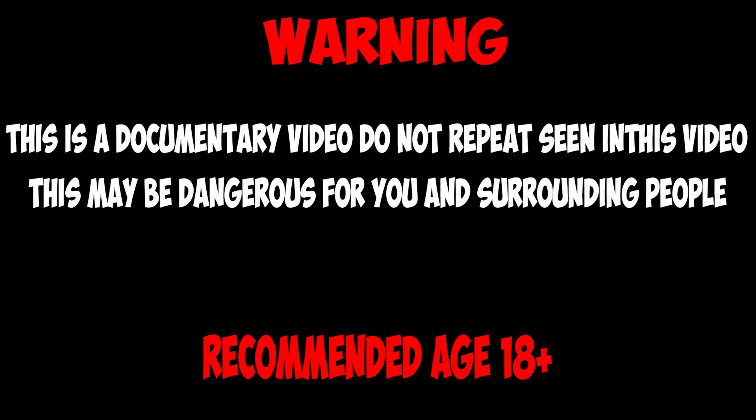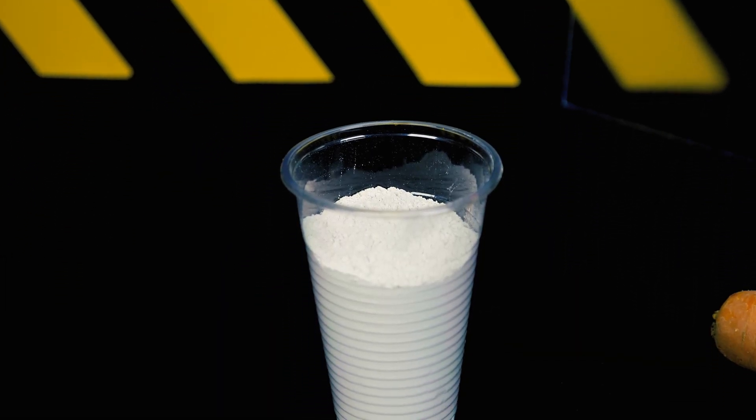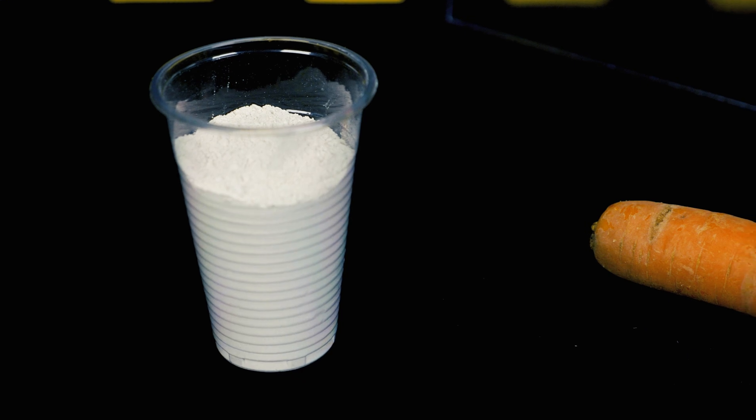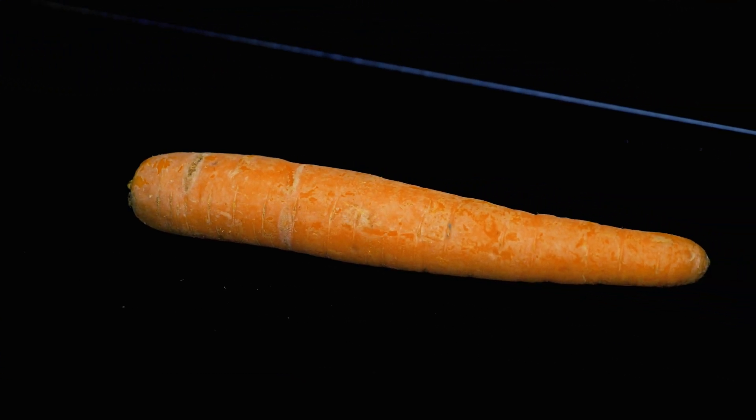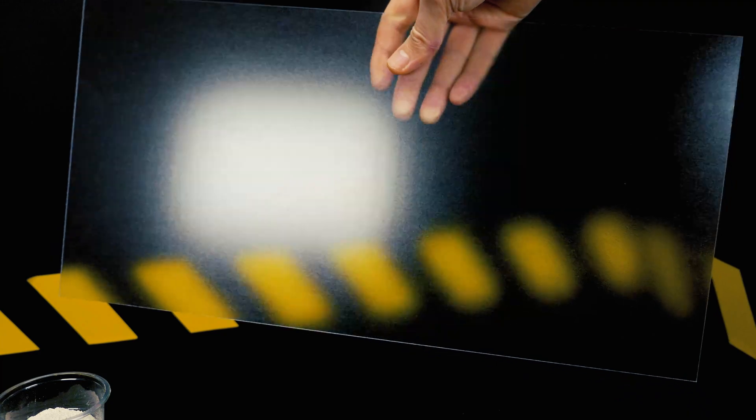Hey! What do you think can connect these items on the table? This is a glass of gypsum, carrots, and a sheet of transparent plastic. I think that this riddle is not yet simple for you, but we will gradually solve it.